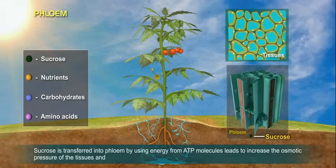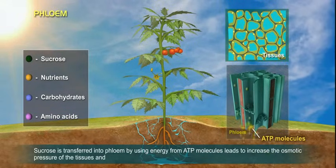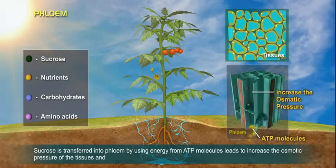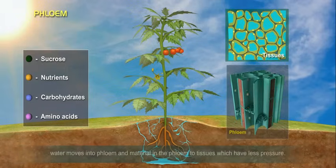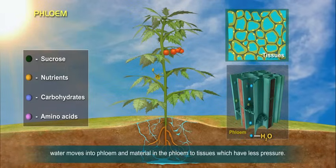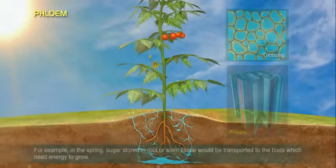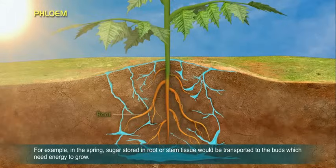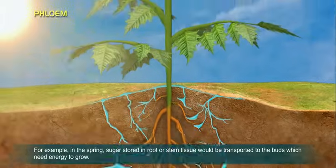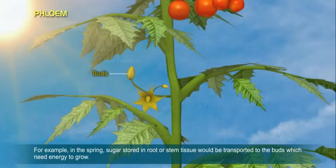Sucrose is transferred into phloem by using energy from ATP molecules, which leads to an increase in osmotic pressure of the tissues. Water then moves into phloem, and materials in the phloem move to tissues which have less pressure. For example, in spring, sugar stored in root or stem tissue would be transported to the buds which need energy to grow.